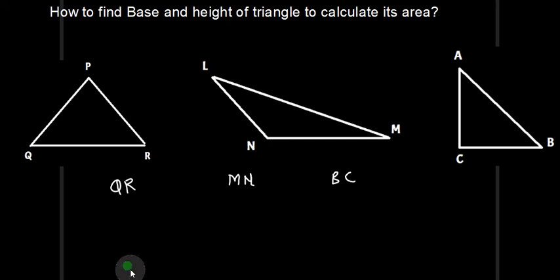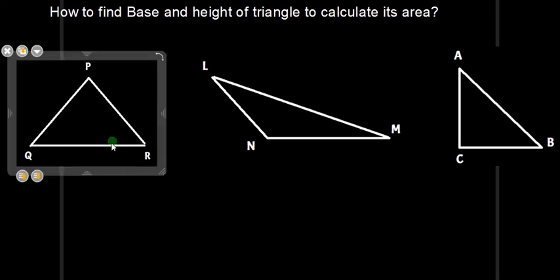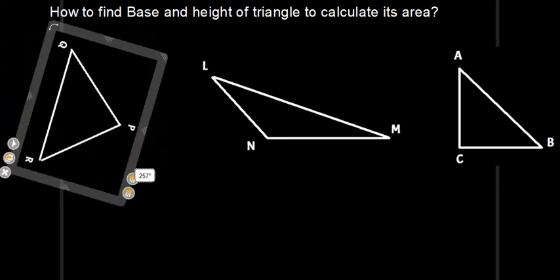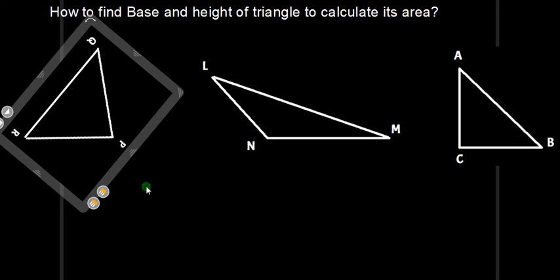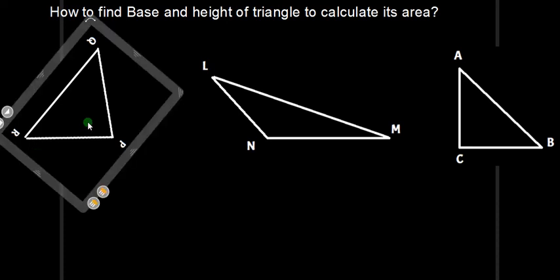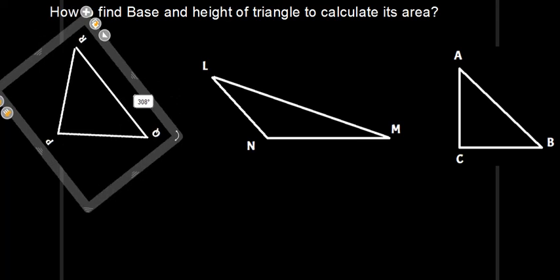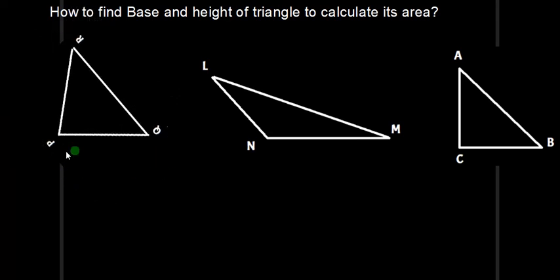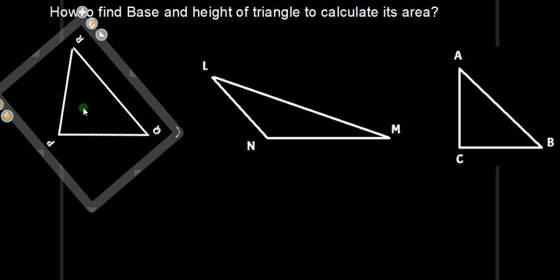Let me clear your misconception here with an experiment. Suppose this triangle — if I had given it to you rotated in a different orientation, I guarantee that most students would have written the base as PR. And if I rotate this triangle another way, I guarantee that many students would have written PQ as the base. I hope you now understand that your concept of base is not correct — any side of a triangle can be considered as a base.